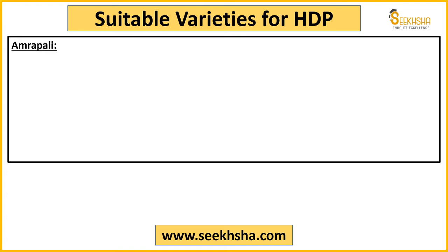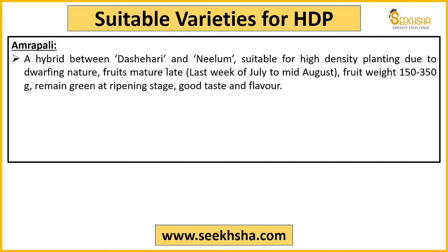When we talk about suitable varieties for HDP in India, Amra Pali is a key one — it is a hybrid of Dasheri and Nilam, and is considered quite suitable for high density planting because of its dwarfing nature. It does not attain very high height, due to which canopy management becomes somewhat easier.